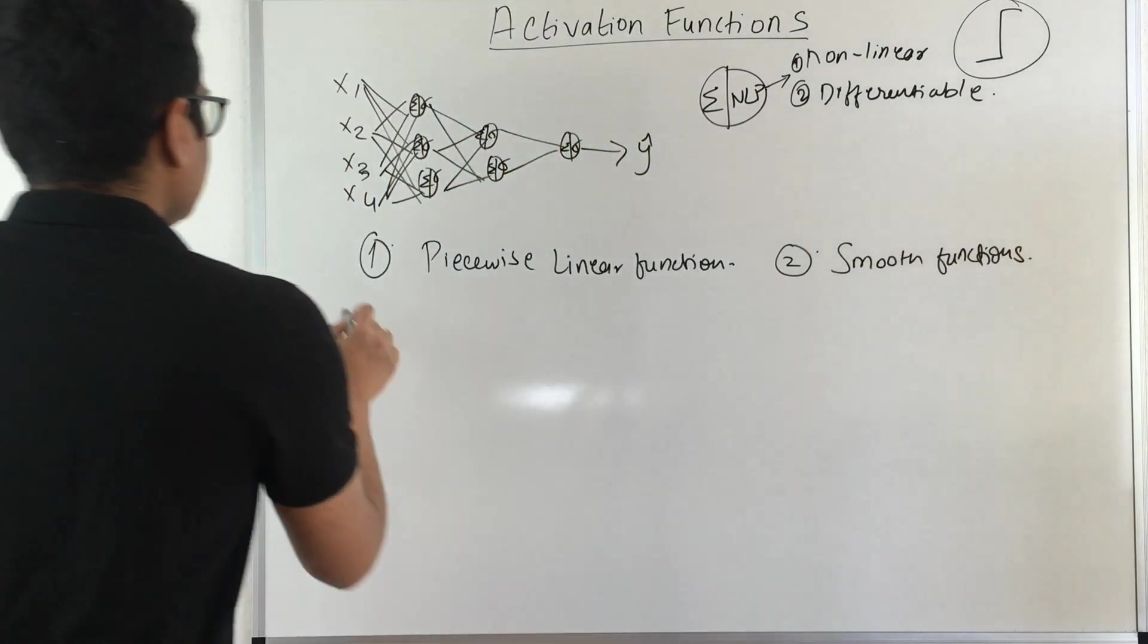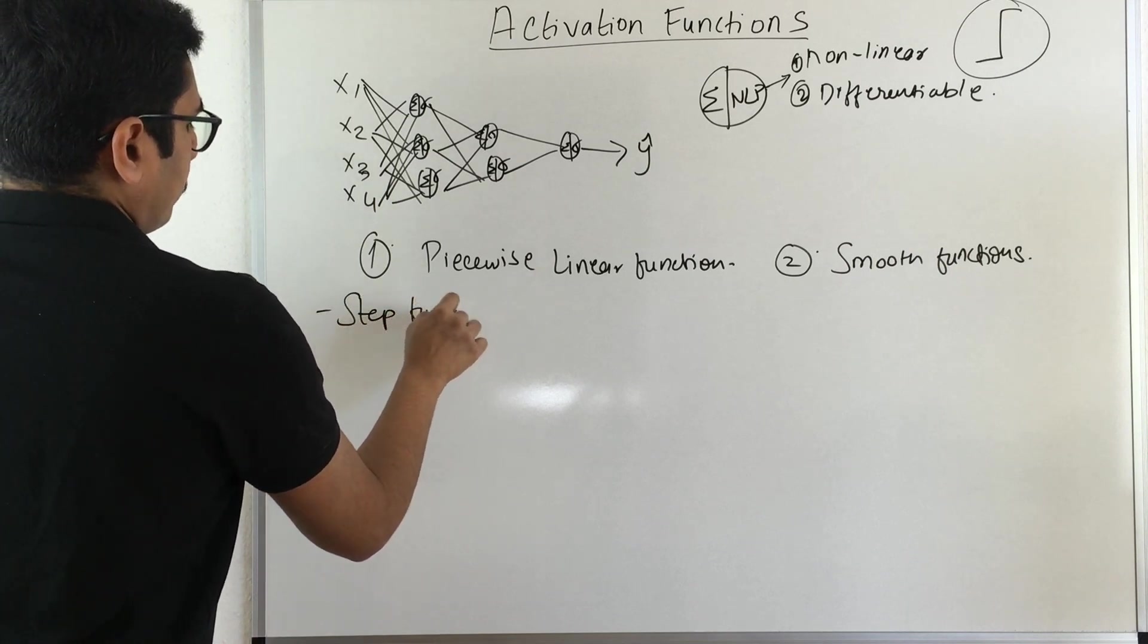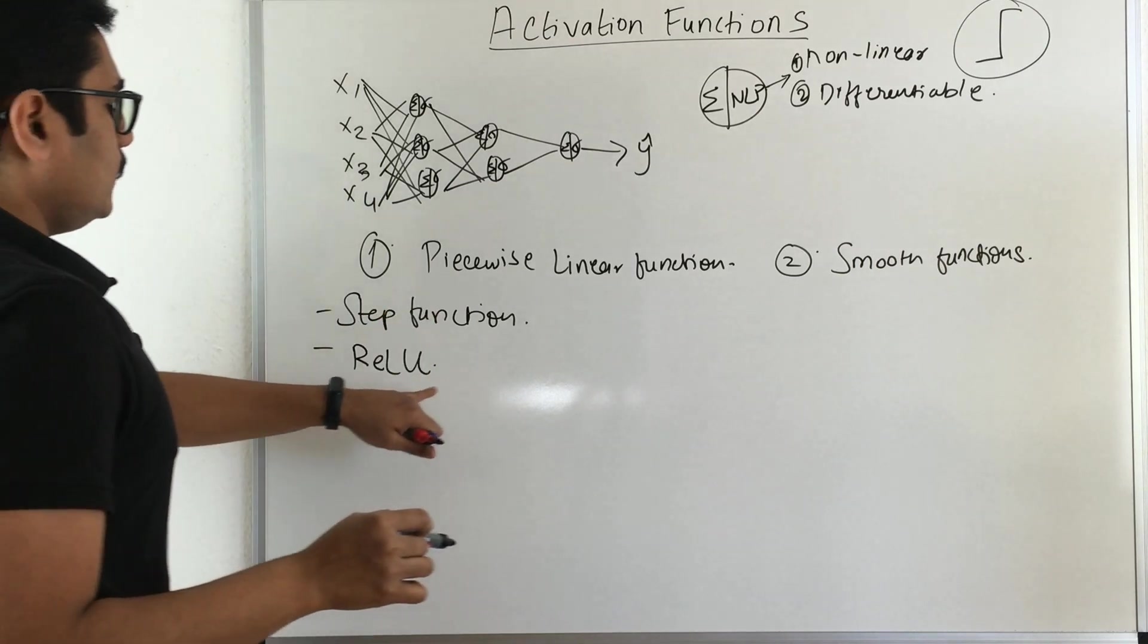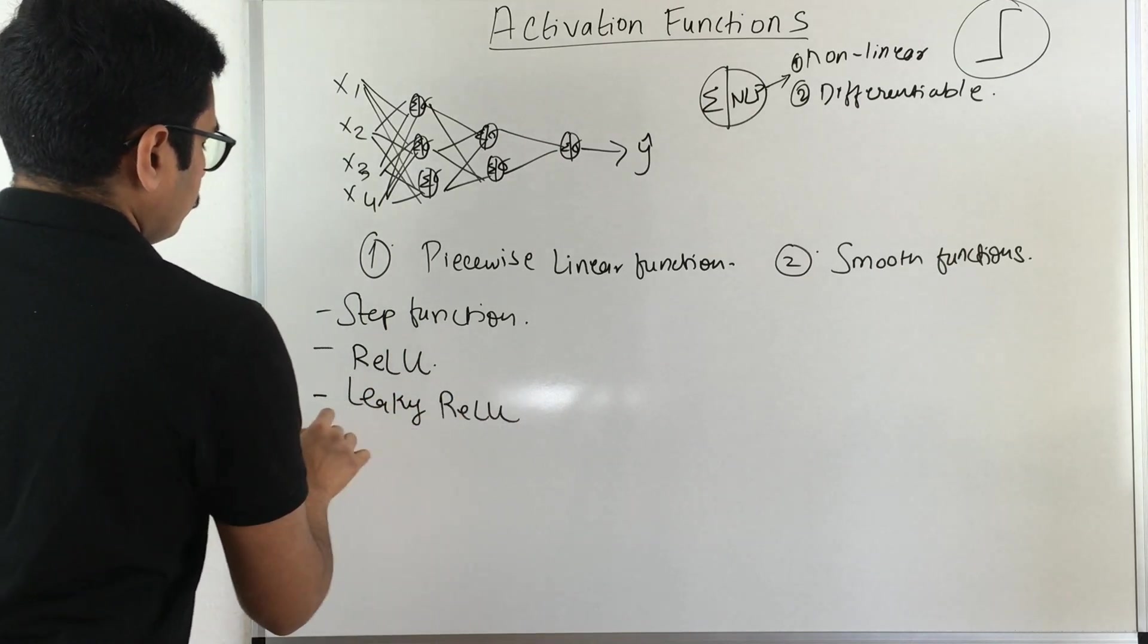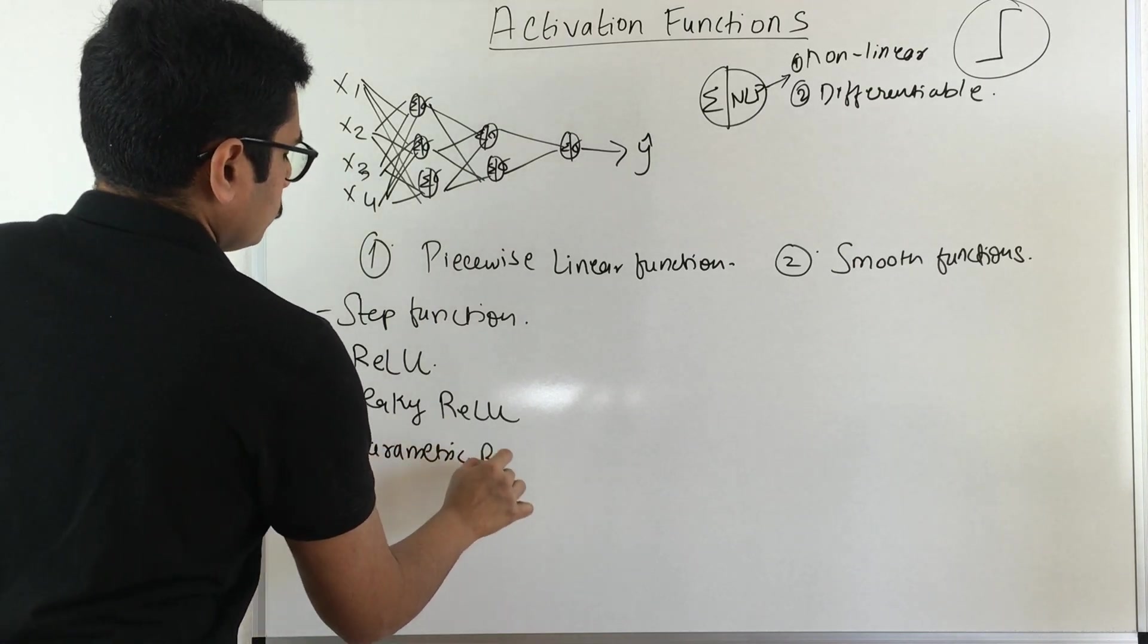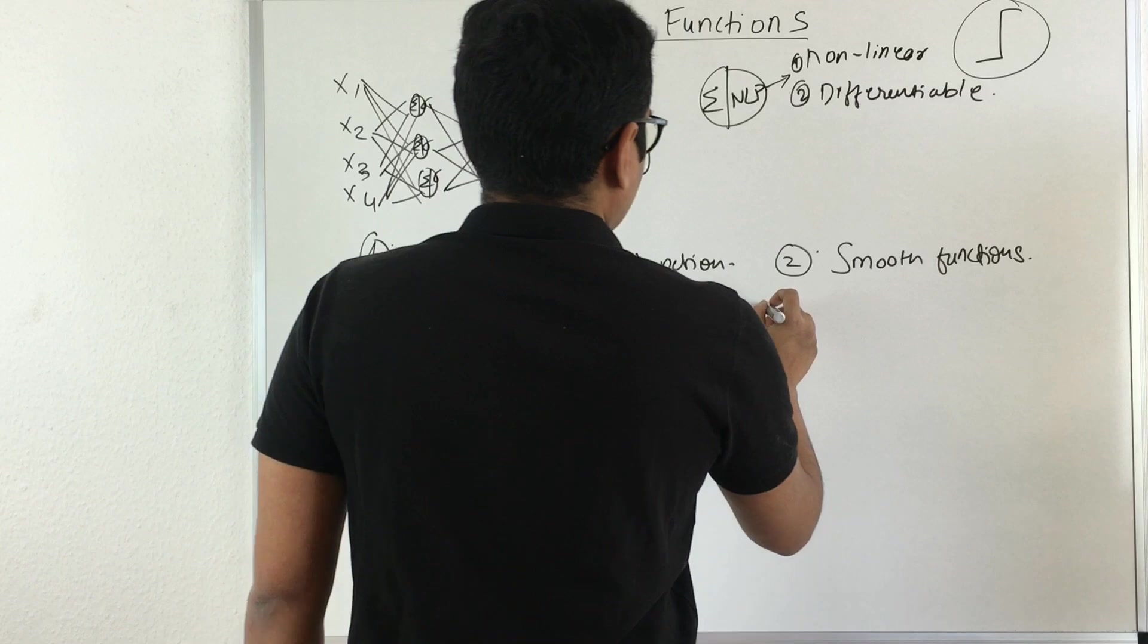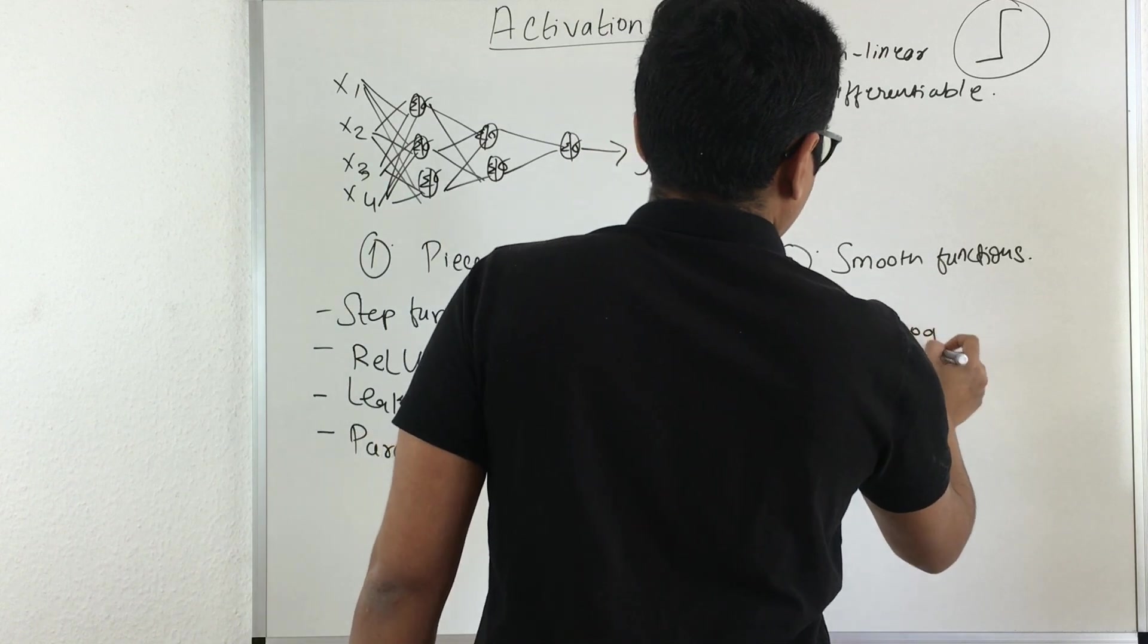In piecewise linear functions we primarily have step function. Then you have something called ReLU, that is rectified linear unit. Then you have a variant of ReLU, that is leaky ReLU, parametric ReLU.